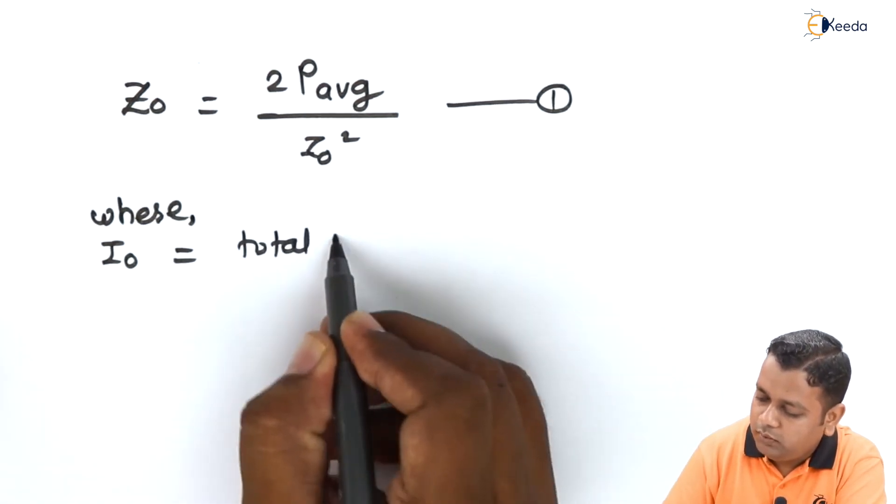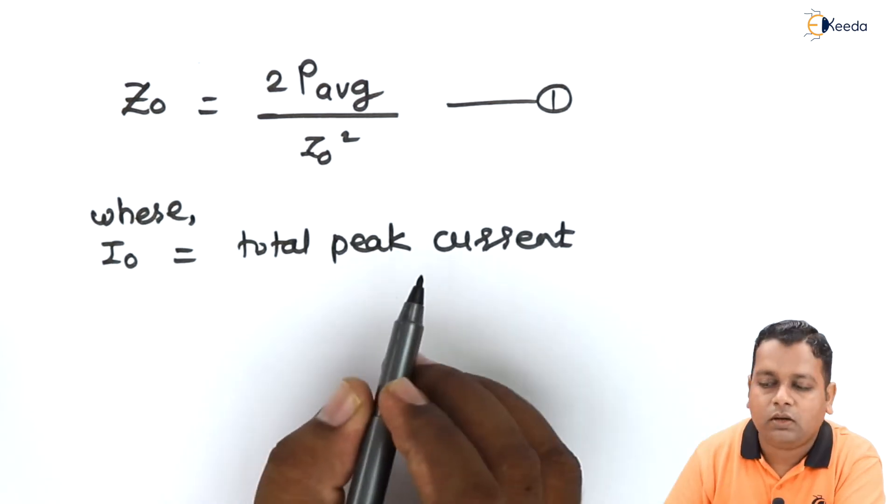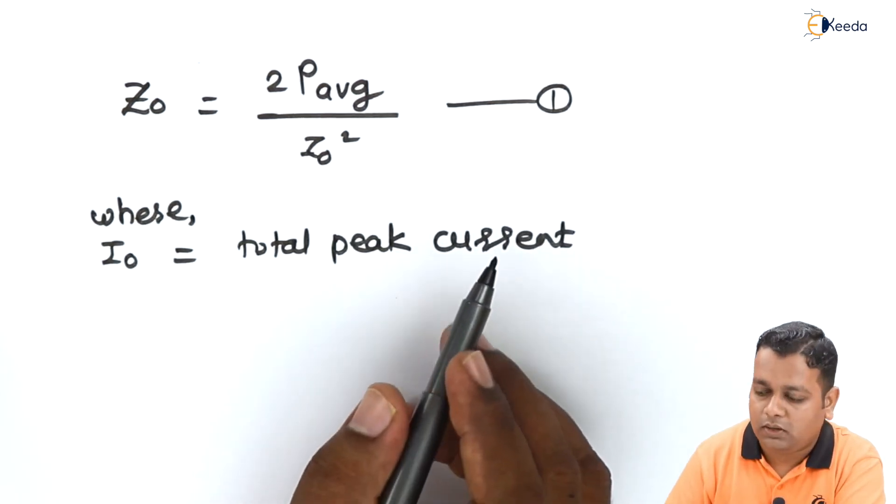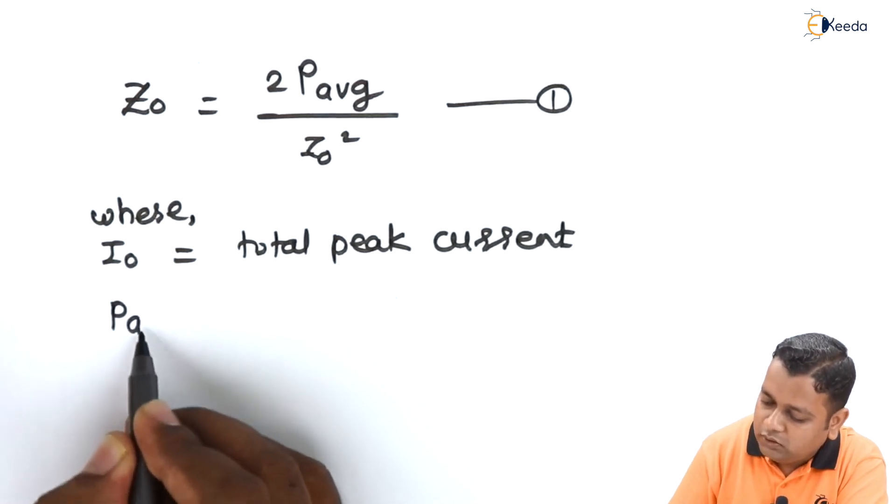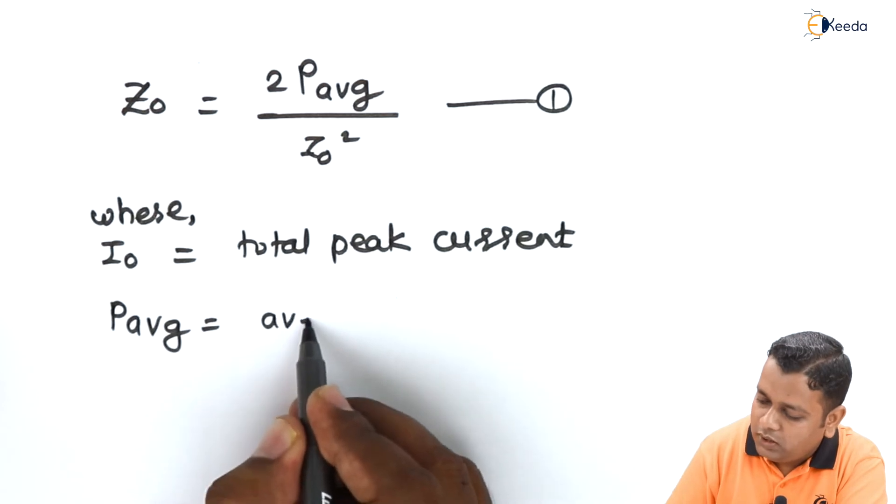The peak current is flowing through the strip conductor, whereas the mention of P subscript avg is equal to the average power.